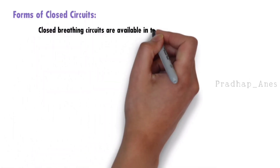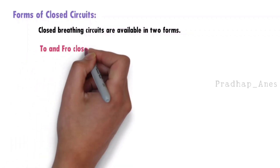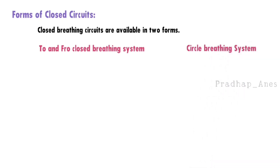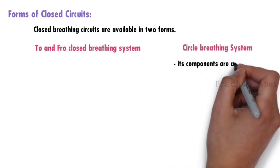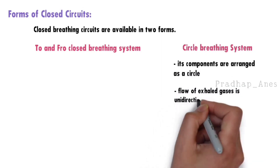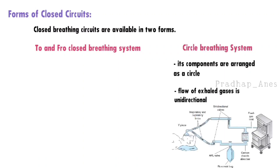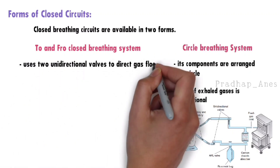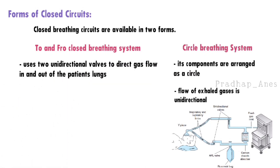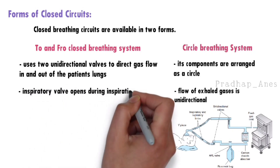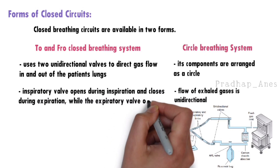Closed breathing circuits are available in two forms: the to-and-fro closed breathing system and the circle breathing system. The circle system, commonly known as a circle absorber, has components arranged in a circle, and the flow of exhaled gases is unidirectional. In contrast, the to-and-fro breathing system uses two unidirectional valves to direct gas flow in and out of the patient's lungs. The inspiratory valve opens during inspiration and closes during expiration, while the expiratory valve opens during expiration and closes during inspiration.